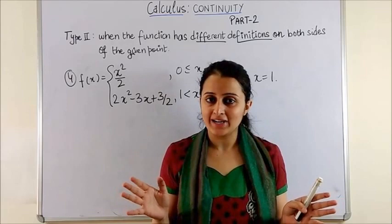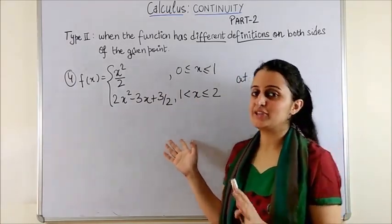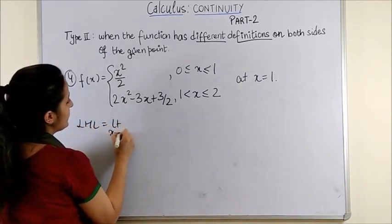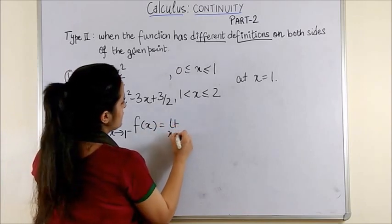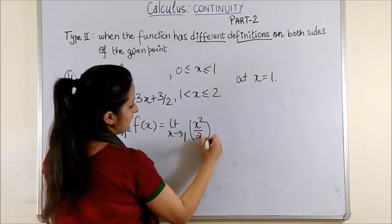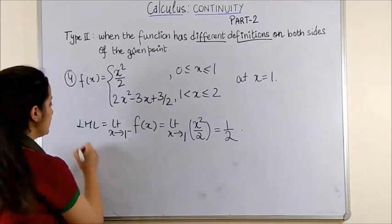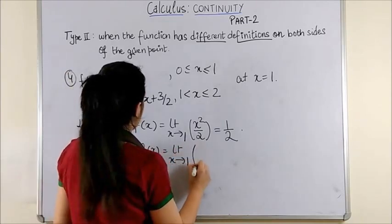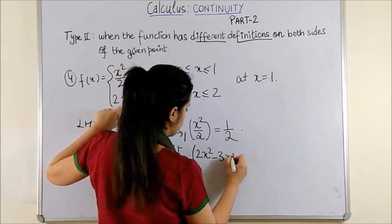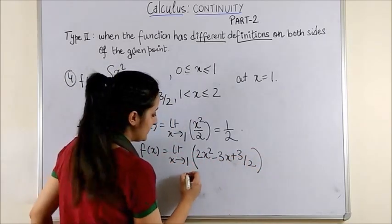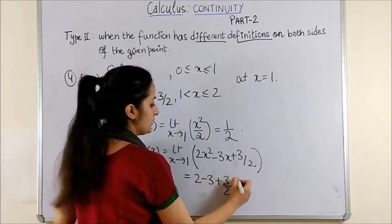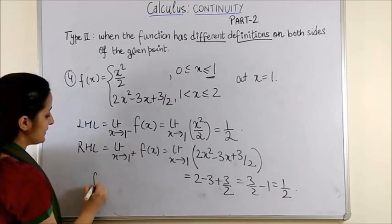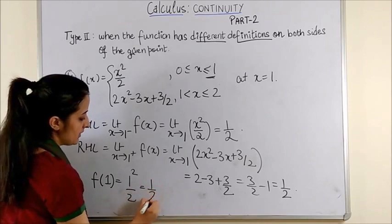After all the turmoil that you had to go through, we are here with a breather. Certainly a simpler question. You have to examine the continuity of the point at x equal to 1. Your LHL is limit x tending to 1 from the negative side. So, we put the function which on direct substitution gives us half as the answer. Similarly, your RHL substitute the value and when you put x as 1, this becomes 2 minus 3 plus 3 by 2, which is 3 by 2 minus 1 and once again it is half. Value of the function at x equal to 1 is once again half.